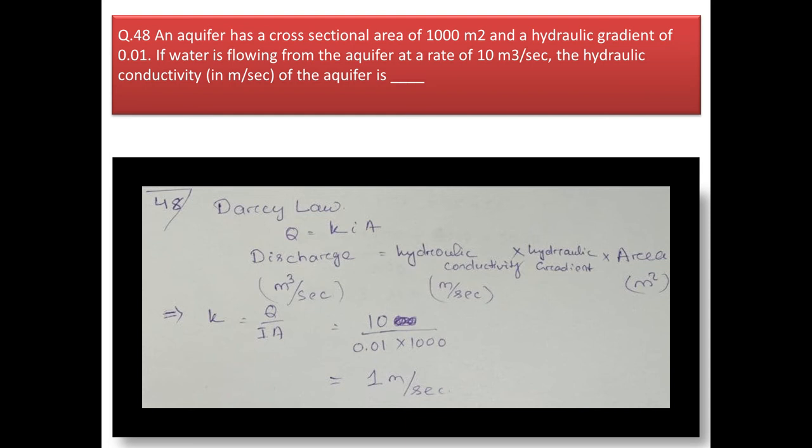Next question: an aquifer has a cross-sectional area of 1000 m², a hydraulic gradient of 0.01, and water is flowing at 10 m³/s. Find the hydraulic conductivity in m/s. Using Darcy's law: Q = KiA, where Q is discharge, K is hydraulic conductivity, i is hydraulic gradient, and A is area. Solving for K, the value comes out to be 1 m/s.